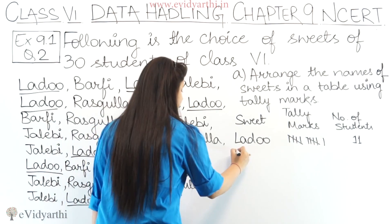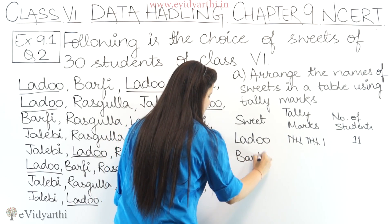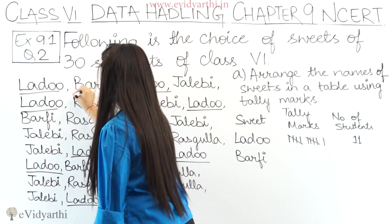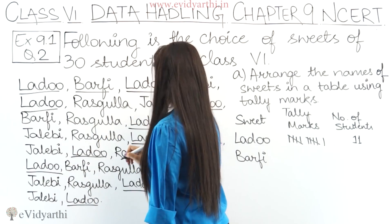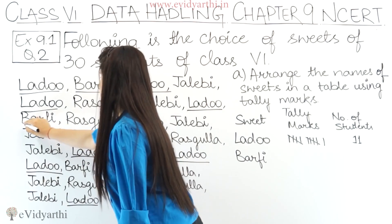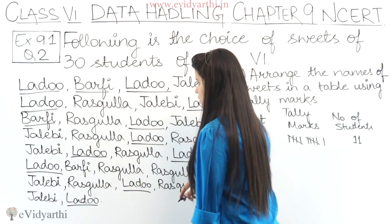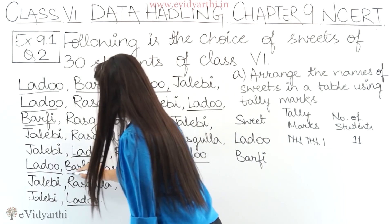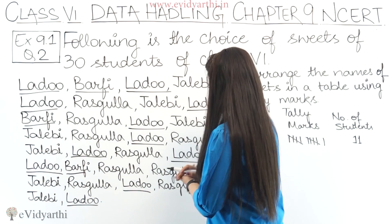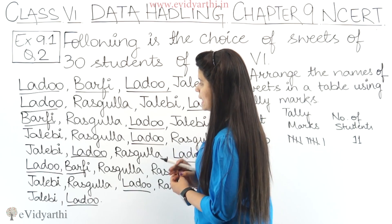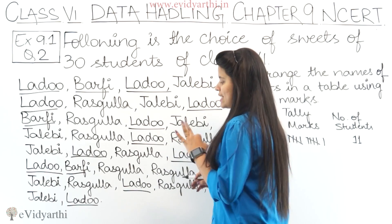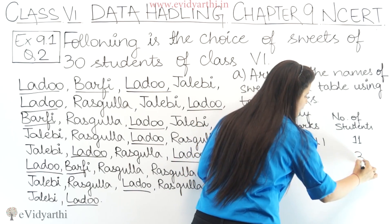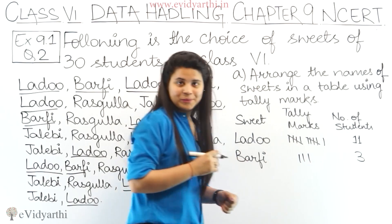Next sweet — let's take barfi. We count: 1, 2, 3. So we can see there are only 3 students who like barfi. We represent that with tally marks 1, 2, 3 and write 3 here.